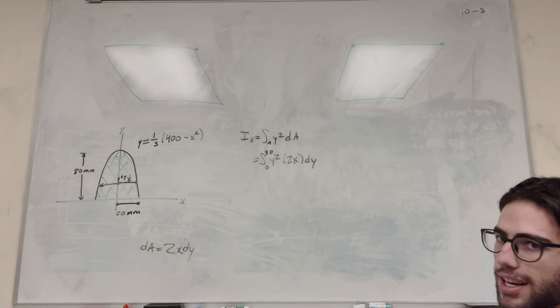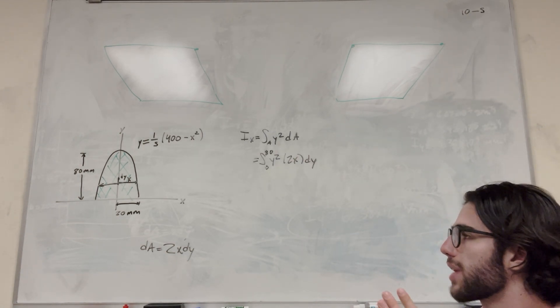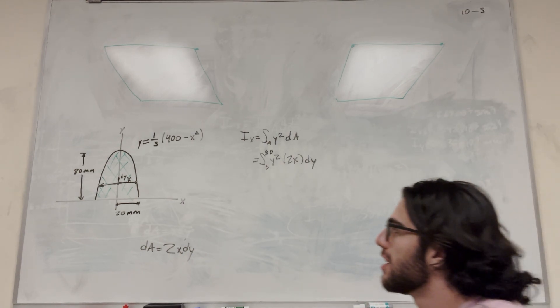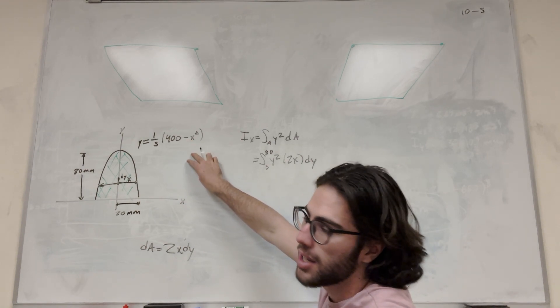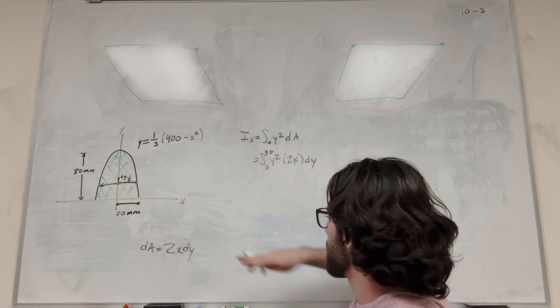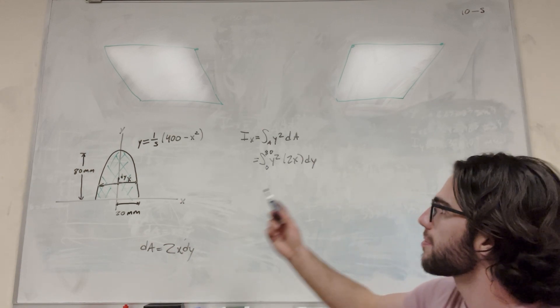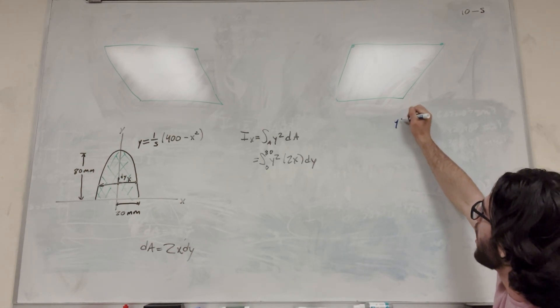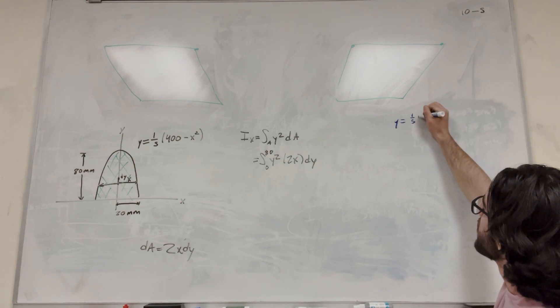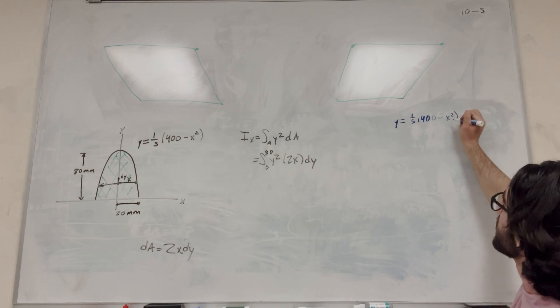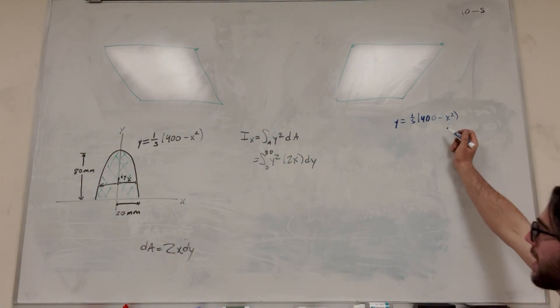And now we have this integral. But we have x and y, and if we integrate this, we're going to leave the x in our answer. So we need to get rid of this x. And how we're going to do that is we're going to go with this equation, and we're going to rearrange it to get x by itself. So let's go ahead and do that. I'm going to use blue marker. So we're starting out with y equals 1/5th times 400 minus x squared. Okay, so now we need to simplify this to get x by itself.